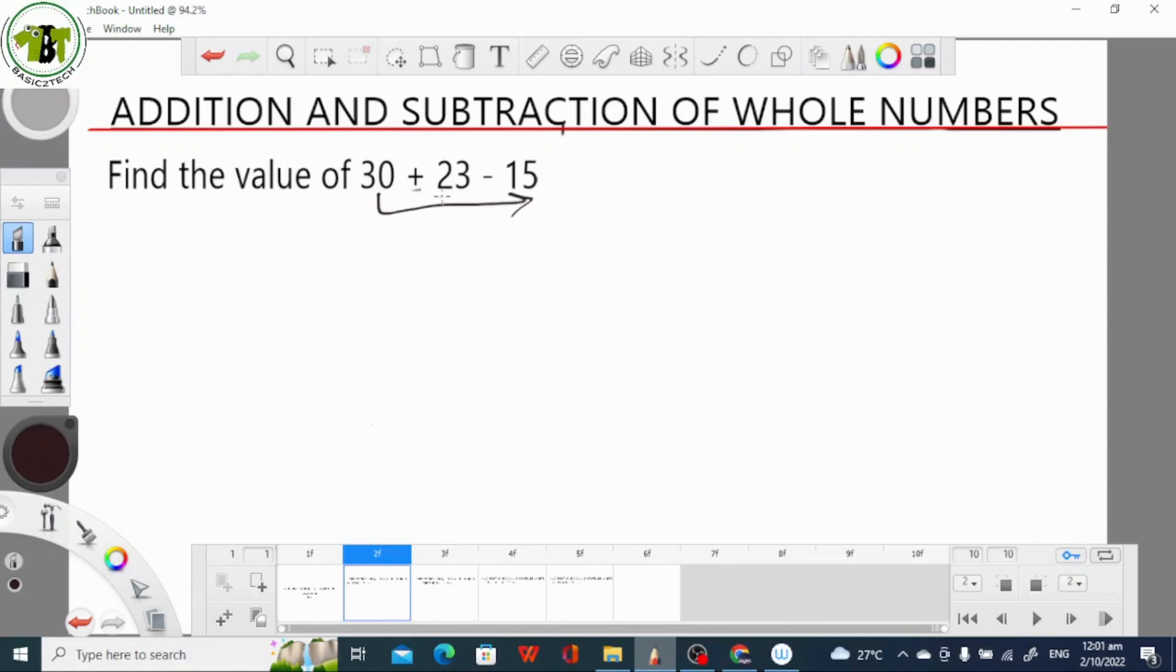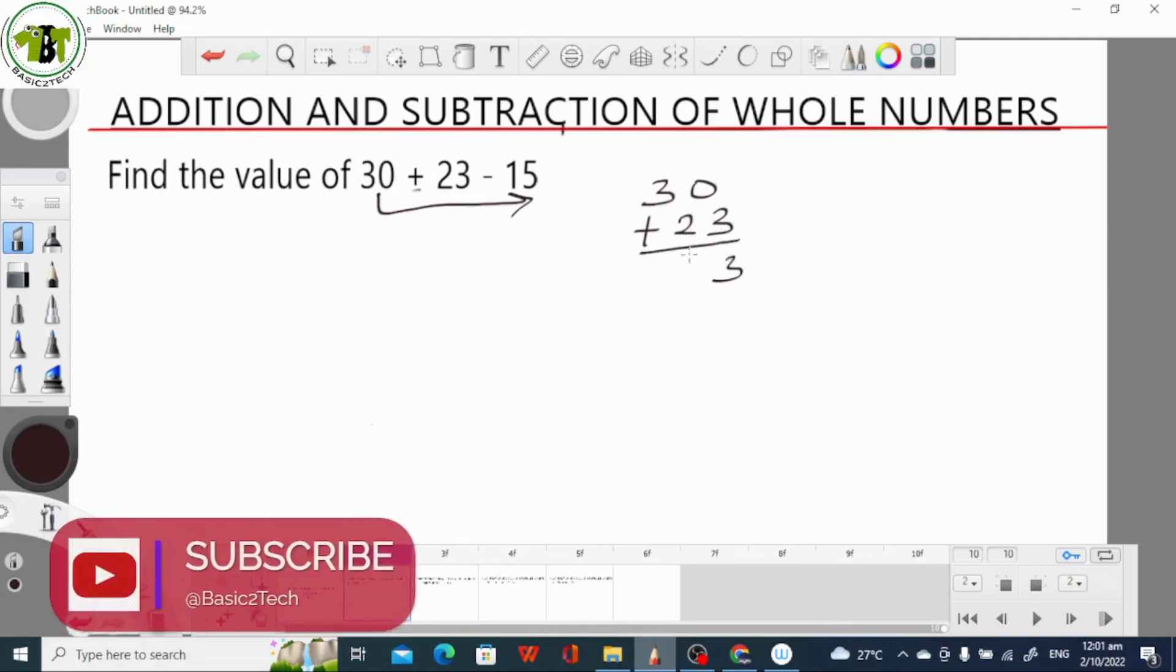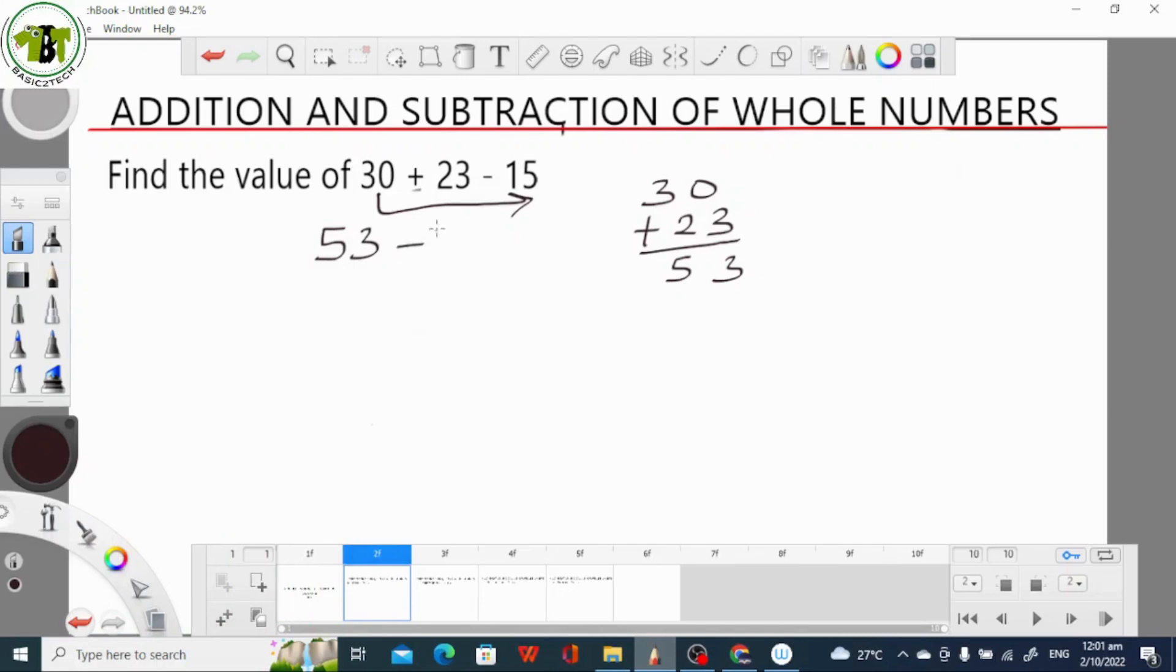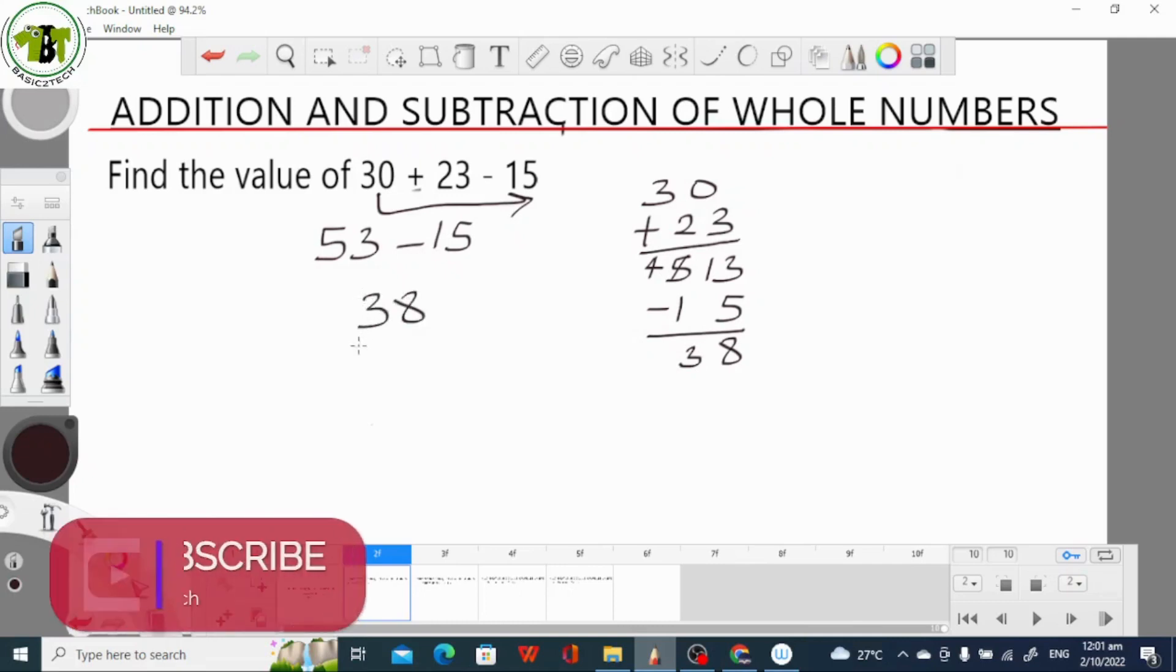That means we have to add before we subtract. So 30 plus 23 is, that gives us 0 plus 3 is 3, 3 plus 2 is 5. That gives us 53 minus 15. Now 3 minus 5 is impossible, so we take 1 from 5 becomes 13, then 5 minus 1 becomes 4. So 13 minus 5 is 8 and 4 minus 1 is 3. So 53 minus 15 gives us 38. That is our final answer.